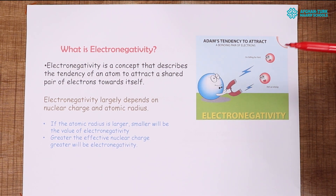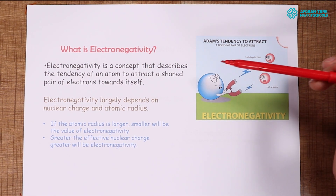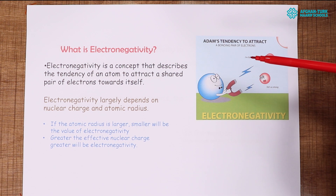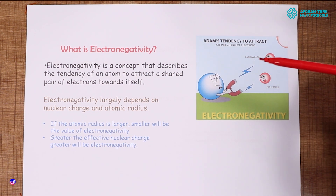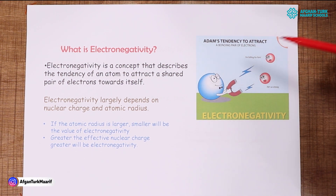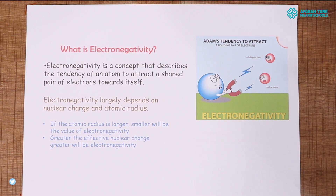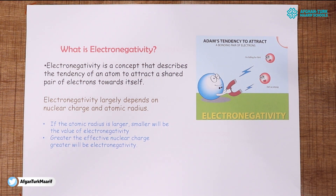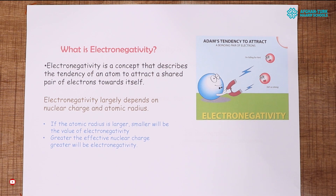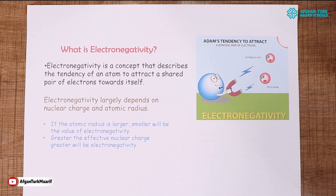Electronegativity is a concept that describes the tendency of an atom to attract a shared pair of electrons towards itself. In other words, if an atom likes electrons, it is electronegative.